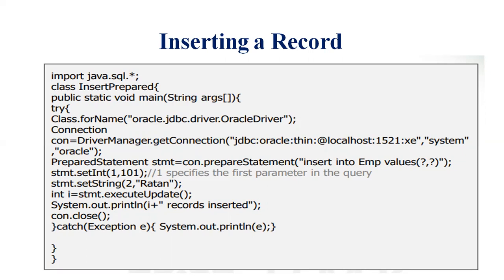The PreparedStatement stmt is created using con.prepareStatement with the SQL: insert into emp values(?,?,?). emp is the table name and we are inserting values. We call stmt.setInt(1, 101) for the first column and stmt.setString(2, 'Pathan') for the second column. Then int i = stmt.executeUpdate() executes the query. System.out.println(i + " record inserted") prints the result. Finally, con.close() closes the connection. If an exception occurs, it is printed in the catch block.